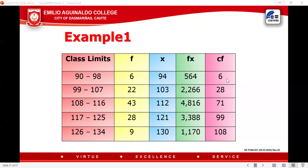If you start from the top, you begin with whatever F value is at the lowest score, and use addition: 6 plus 22 equals 28; 28 plus 43 equals 71; 71 plus 28 gives 99; 99 plus 9 gives 108. Whatever is the value of your N, that will be your last number when starting from the top going down.